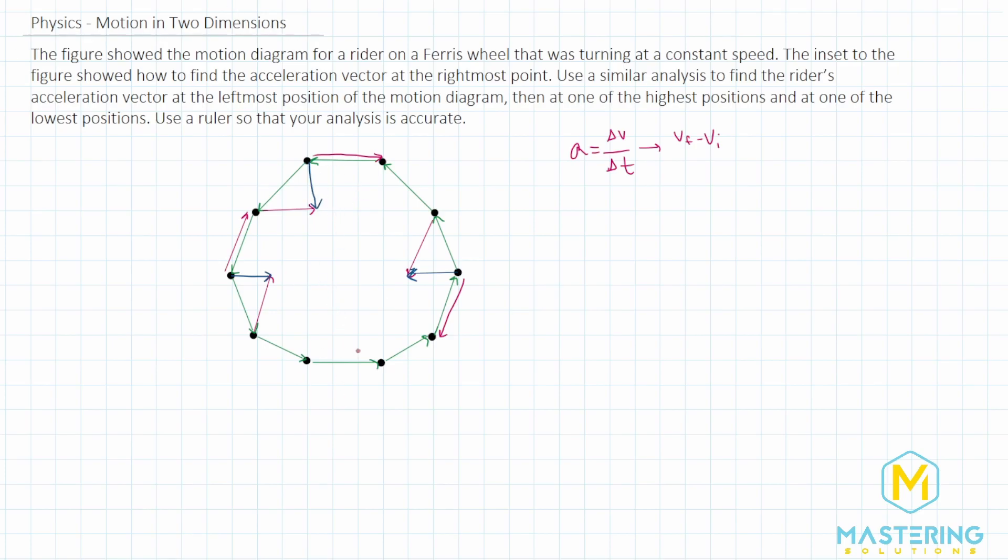And then we'll do the same thing down here on the bottom. Obviously, my circle isn't super circular, but it is a pretty good representation to show what we're doing. So we'll pick this point for one of the bottom most points. This is the initial, this is the final. So we take the initial, draw it backwards, and then slide it, the tail of this one goes to the tip of this one, like so. And then that is pointed to the center of the circle there.